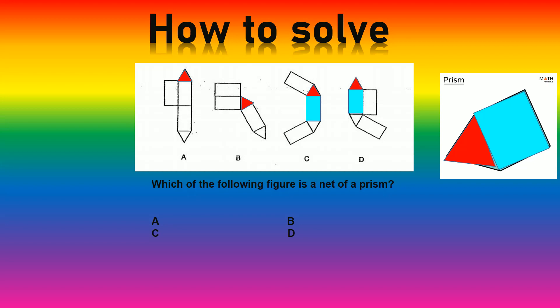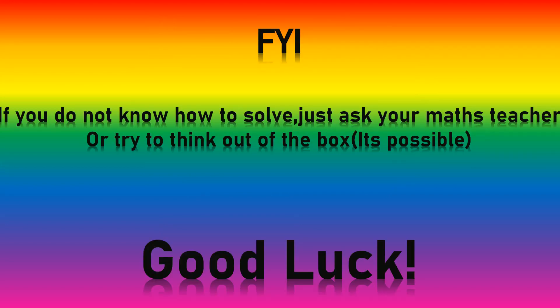Next, you take the blue one — that side — and convert it into some of the rectangles. The ones that look like these are... the answer is B. If you do not know how to solve, just ask your math teacher, or try to think out of the box. It's very hard to imagine by just looking at the screen, so please seek help from your parents or guardians, or your teachers. Good luck!